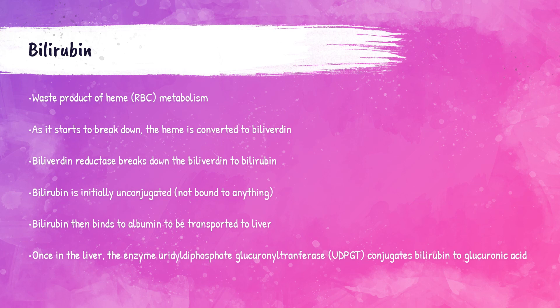The bilirubin then binds to a transport protein called albumin and is carried to the liver. Once in the liver, an enzyme called uridine diphosphate glucuronosyltransferase, or UDPGT, conjugates the bilirubin to glucuronic acid. So up until this point it's unconjugated — now it's conjugated to glucuronic acid. This binding causes the bilirubin to become conjugated bilirubin, also called direct bilirubin.